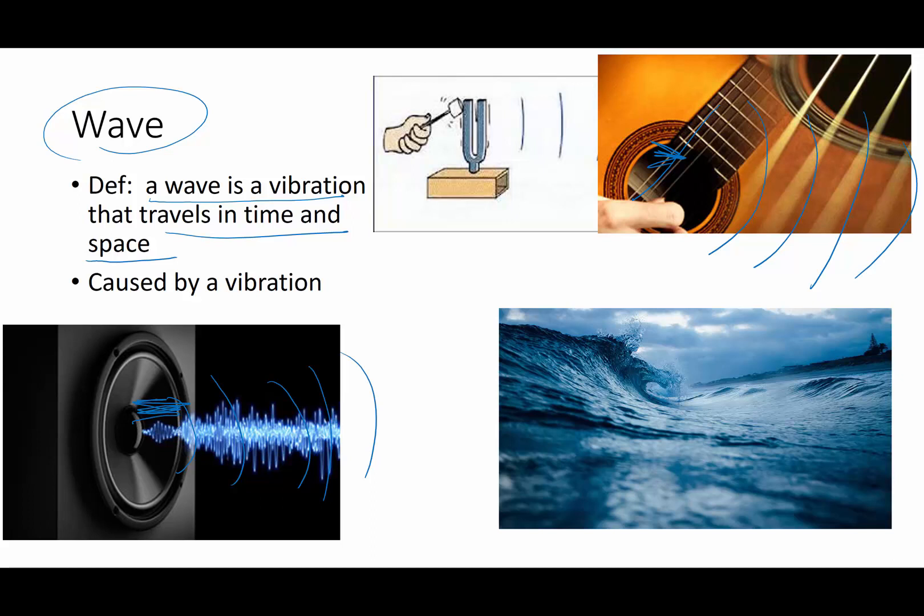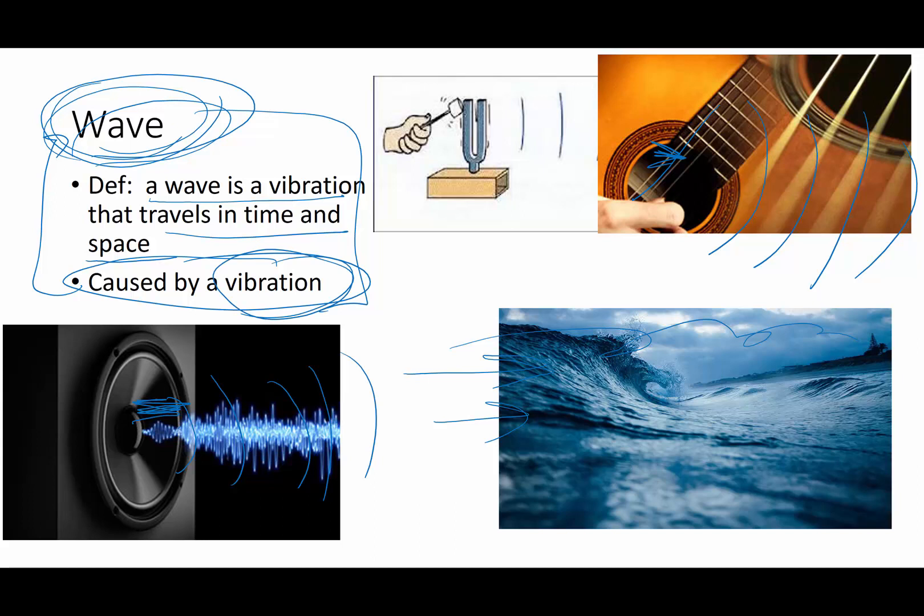It is the guitar string that oscillates up and down that causes the sound waves to propagate, and it is that force of the wind over the water that makes those ocean waves travel. So waves are caused by vibrations, but they are not the same things as vibration. Waves are the things that travel. Vibrations are the things that cause the waves.